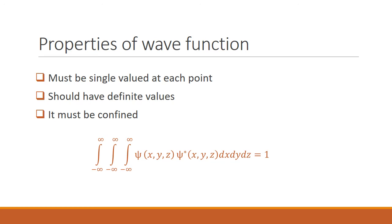The second property is that the wave function should have definite values — that is, the wave function cannot be infinite at any point. A wave function being infinite at a point doesn't make physical sense, because the wave function describes a system and the system will be in a definite state. A system may have a definite position and definite energy; it cannot have indefinite or infinite physical properties. Therefore, the values of a wave function should be definite and finite at each point.